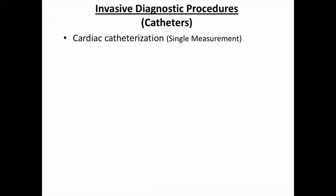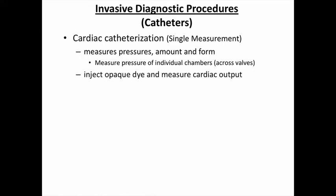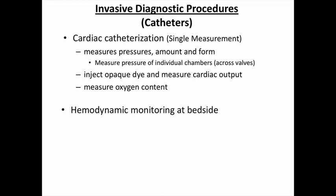In the invasive category, we have cardiac catheterization and hemodynamic blood monitoring. Cardiac catheterization is a single measurement — you insert a cardiac catheter and it measures pressures in the individual chambers and also across the valves, which is helpful especially when somebody's heart is failing. We can also administer a dye to measure cardiac output, and we can measure oxygen content with cardiac catheters.